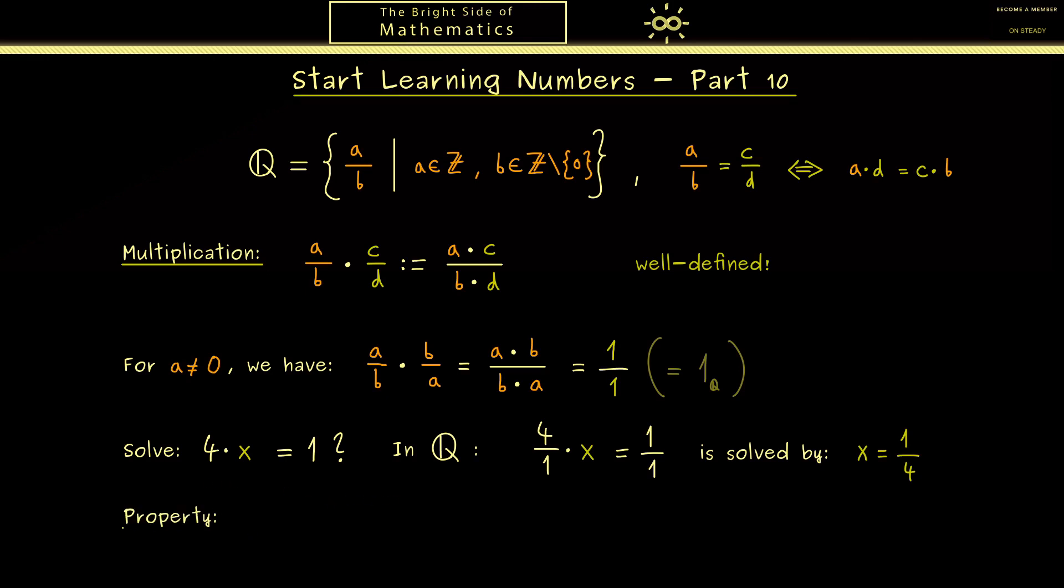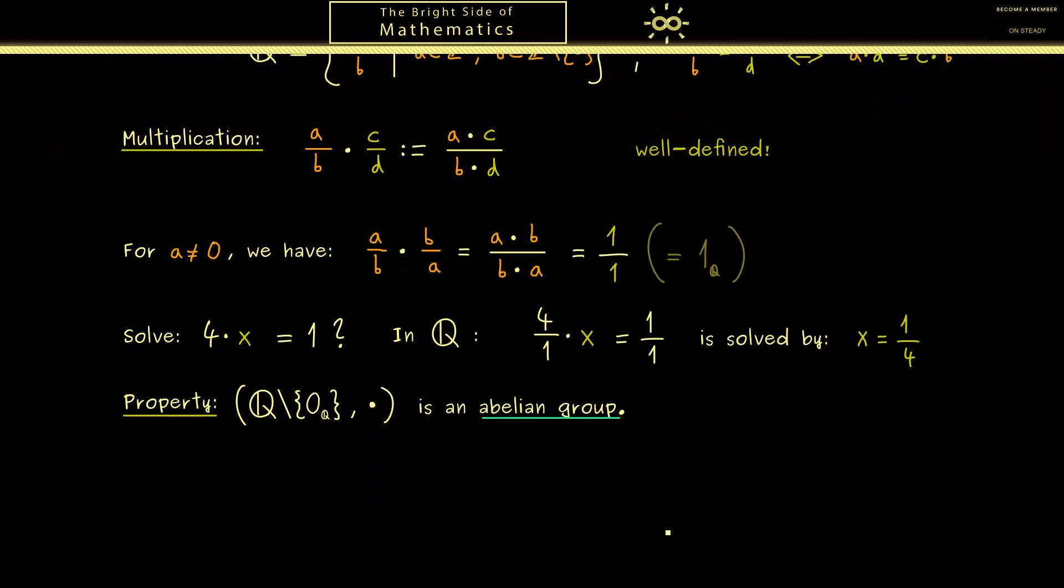However, we also recognize the nice structure the rational numbers have. When we exclude the rational number we called 0, which simply means that the numerator is 0, then together with the multiplication we have something we called an abelian group. Please recall this means we have for the multiplication the associative law, the commutative law, a neutral element and also all inverses. So you see this is something new. This is what the integers didn't have. However they also formed an abelian group with respect to the addition.